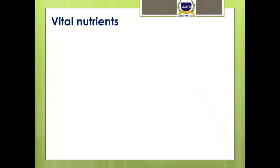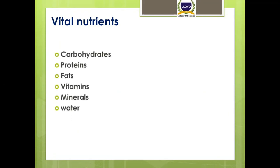It is necessary first to understand the difference between vital and essential nutrients. We have studied about the vital nutrients in the previous classes too. Everyone knows about the basic roles and requirements of 6 major nutrients like Carbohydrates, Proteins, Fats, Vitamins, Minerals and Water.